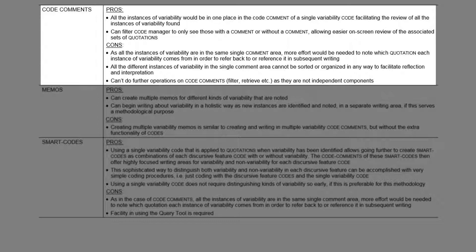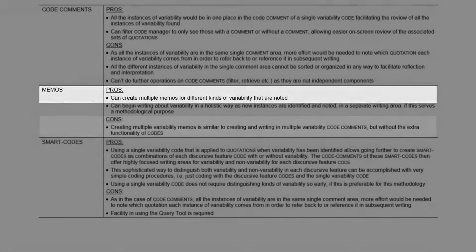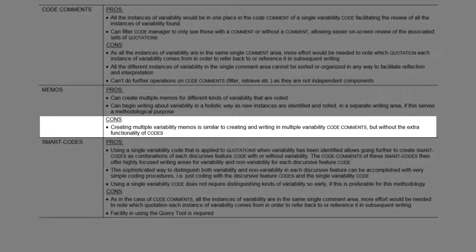This may not be needed depending on what is coming next, but if it is, this can be mitigated by using individual memos each linked to a variability code, because memos are independent components that can be acted on — grouped, sorted, relinked, and so on. But the memo is still a single freeform writing area, and unless we want multiple memos for each code for each example of variability — which is not practical — this doesn't make much sense, and we're better off with multiple variability codes, each with its own comment.